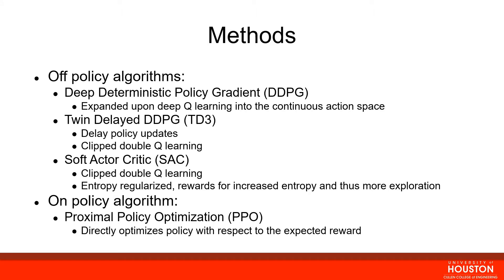While the first three are off-policy algorithms, the last one, proximal policy optimization, or PPO, is an on-policy algorithm meaning it uses the experience obtained using the current policy network. PPO also directly optimizes the policy with respect to the expected rewards, which is different from the first three algorithms.